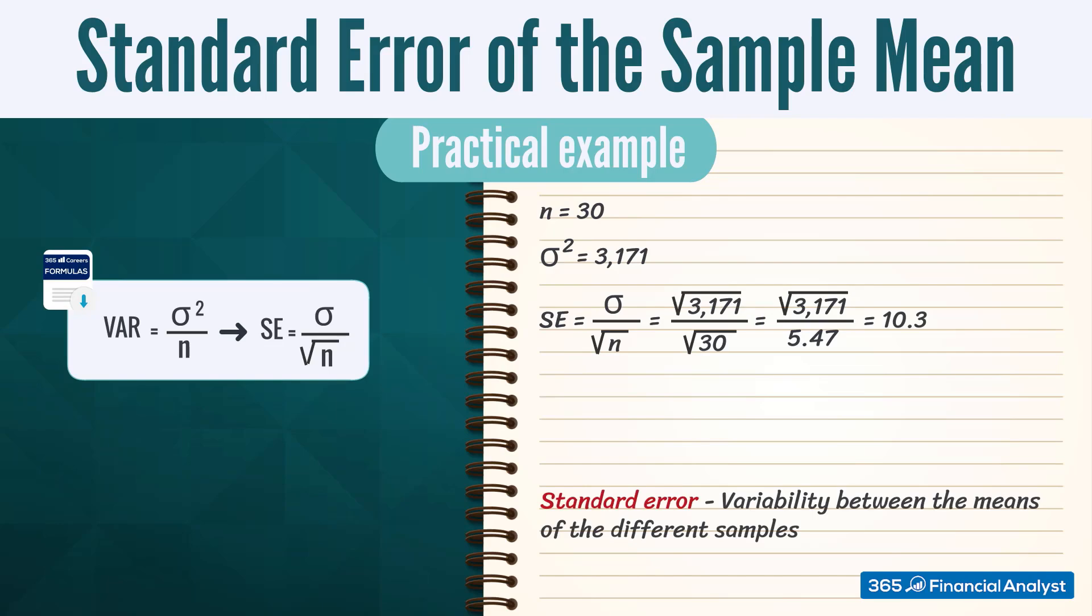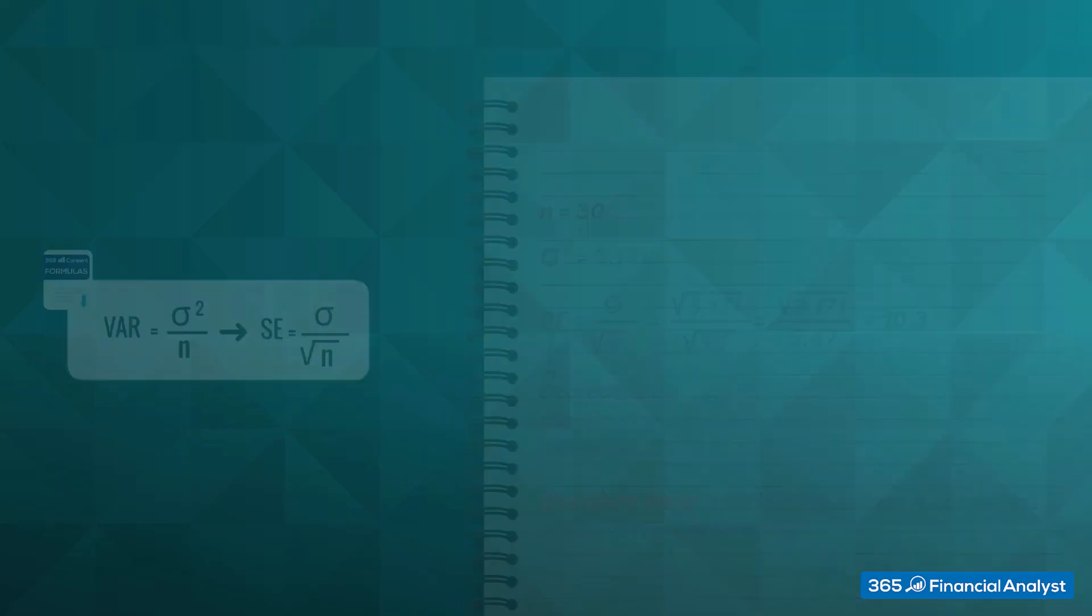The standard error shows the variability between the means of the different samples we extracted. You can guess that since the term has its own name, it is widely used and very important. Please note that the standard error decreases as the sample size increases. This makes sense as bigger samples give a better approximation of the population. That's all for now. Thanks for watching.